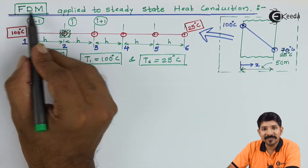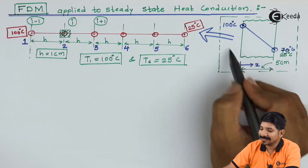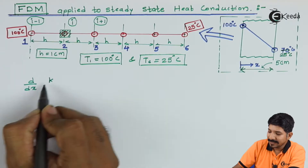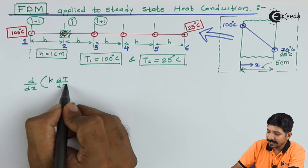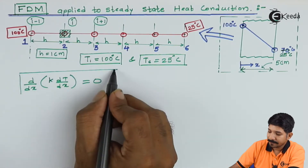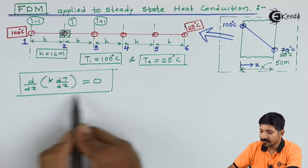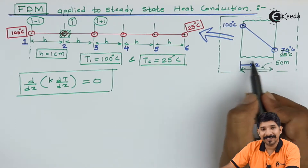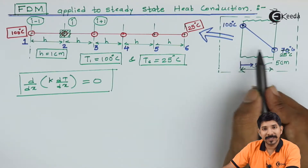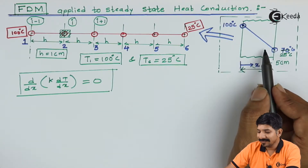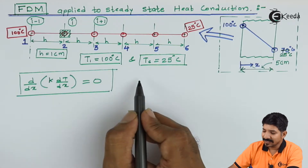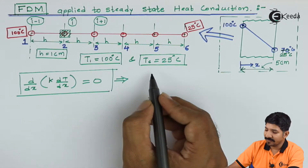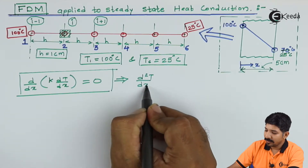We are going to apply the finite difference method to the steady state heat conduction equation and solve it. The equation is d/dx(k dT/dx) = 0. The assumptions are: heat transfer is only one-dimensional in the x-direction, it is steady state so temperature does not depend on time, there is no heat generation, and thermal conductivity is constant. With these assumptions the general heat conduction equation simplifies to d²T/dx² = 0.